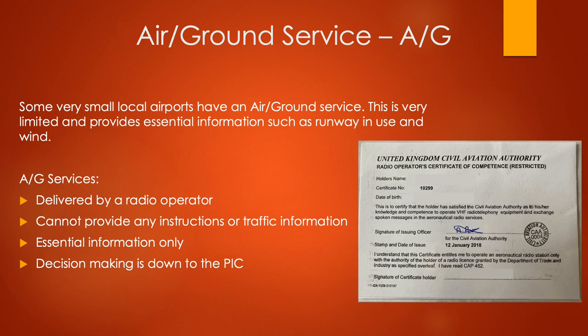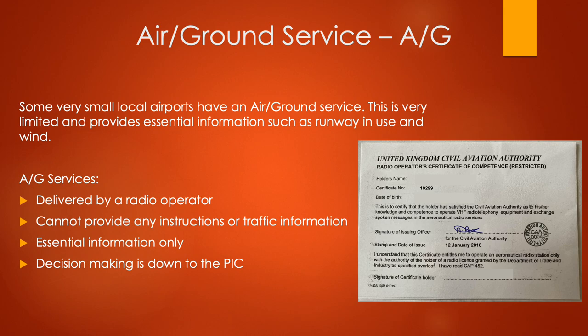The last of the air traffic services is the air ground service, A/G. This is normally for much smaller local airports and is a very limited service, providing only essential information: wind, pressure setting, and the runway in use. It is delivered by a radio operator — not trained as an air traffic controller — who is only trained on the radio to pass information received from their sensors and equipment. They cannot provide any instructions or traffic information, so it is always the pilot's responsibility to avoid collisions.